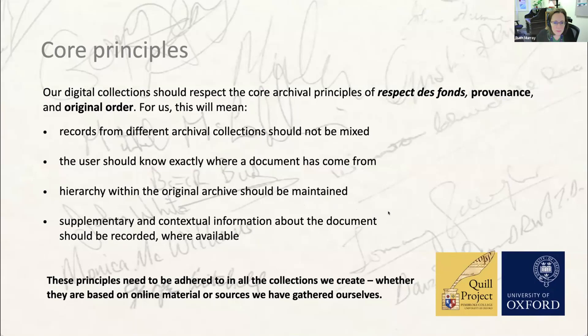Thirdly, the hierarchy within the original archive must be maintained. If you have boxes within boxes, the user should be able to understand the context of the document they're looking at in the wider collection. Finally, supplementary and contextual information about the document should be available to your end user. We want to replicate as closely as possible the experience of visiting the archive and seeing the document in the physical archive box.